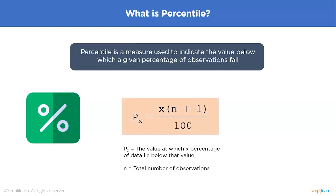The formula to calculate a percentile is: Px = x(n+1) / 100, where x is the percentile you want to calculate and n is the total number of observations. Let's understand this formula better with the help of an example.